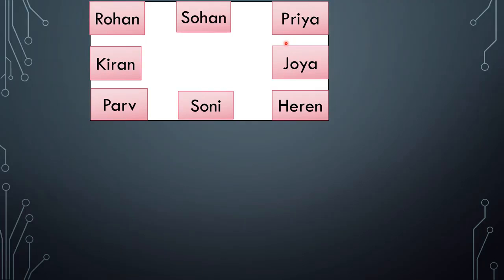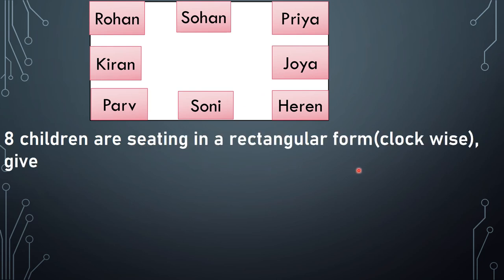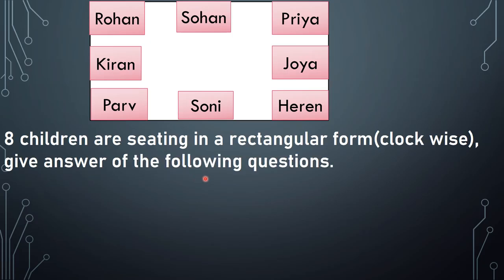After that, on the basis of this arrangement, we have to give the answer of some questions. 8 children are sitting in a rectangular form, clockwise. Give answer of the following questions. This is the rectangular position, this is the rectangular form, and clockwise. I have explained you clockwise. I have specially written this so that you can give the answer of every question on behalf of clockwise arrangement.